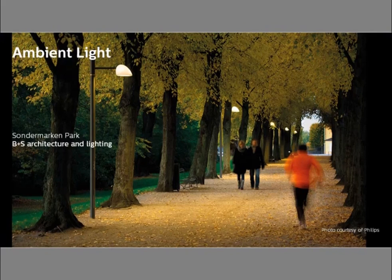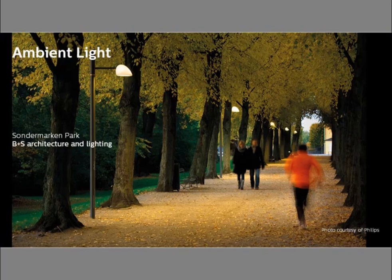Another example of ambient light is from Sondermarken Park in Fredericksburg, Denmark, designed in 2011 by B Plus S Architecture and Lighting. They've created a very well-lit pathway through this beautiful park landscape that allows people to easily navigate the space and experience the city's green spaces in a comfortable, inviting way well into the evening hours — an important factor in this climate — allowing people to take advantage of open spaces even in early evening when they might not otherwise feel comfortable.